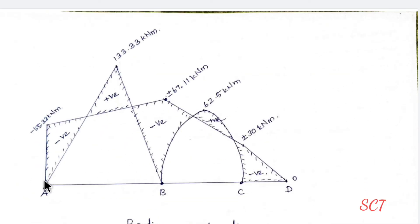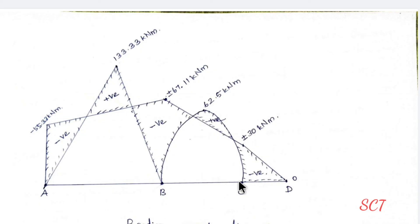Now drawing the bending moment diagram: at A, moment is 0; maximum simply supported BM for Span AB is 133.33 kNm; support end is 0; maximum BM for Span BC is 62.5 kNm. Plot M_AB, M_BA, M_BC, M_CB accordingly.